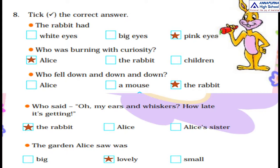To summarize the tick-the-correct-answer section: the rabbit had pink eyes; Alice was burning with curiosity; the rabbit fell down and down and down; the rabbit said 'Oh my ears and whiskers, how late it's getting'; and the garden Alice saw was lovely.